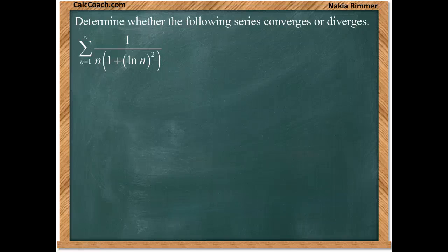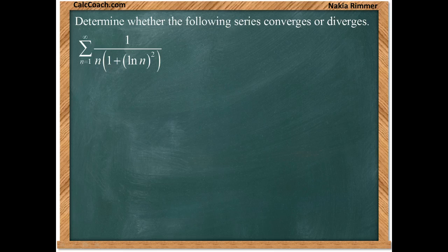Determine whether the following series converges or diverges: sum from 1 to infinity, 1 over n times the quantity of 1 plus log n squared, where the entire quantity of log n is squared.